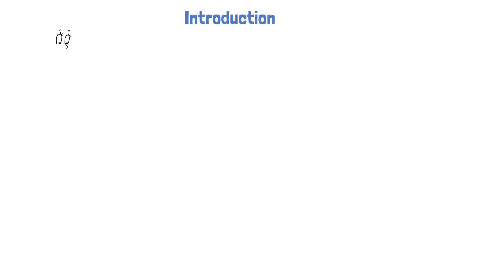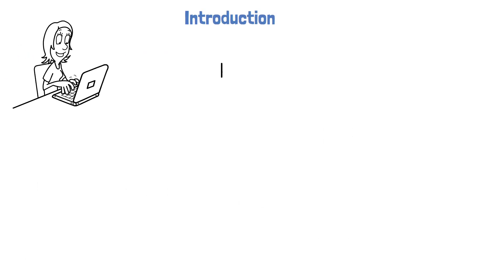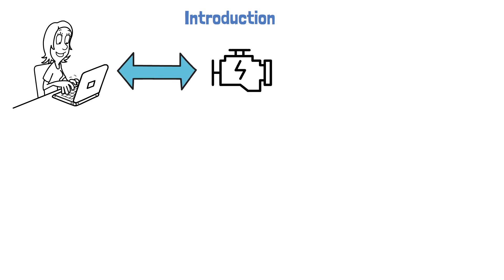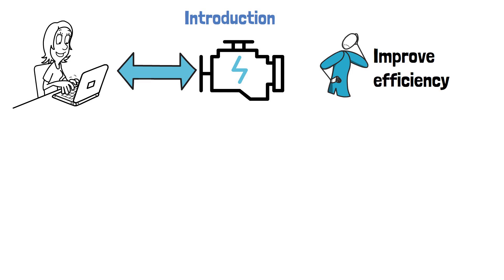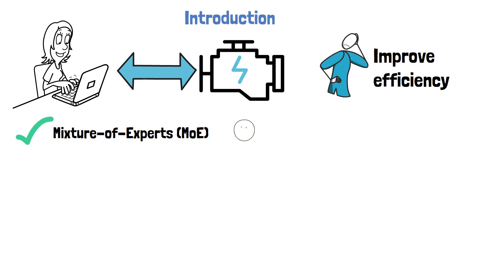In recent years, we use AI for more and more use cases, interacting with models that provide us with remarkable outputs. As we move forward, the models we use are getting larger and larger, and so an important research domain is to improve the efficiency of using and training AI models. A method which we already touched in a previous video that became popular for large language models, but later on also for computer vision, is Mixture of Experts, which helps to increase the model size without a proportional increase in computational cost. However, it comes with a large memory footprint since we need to load all of the experts.